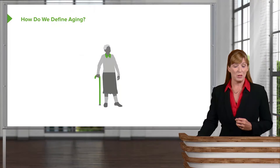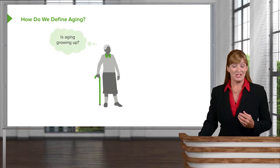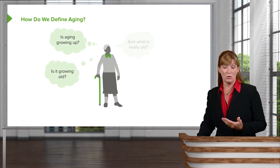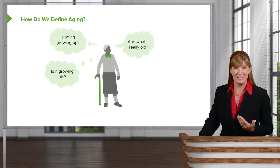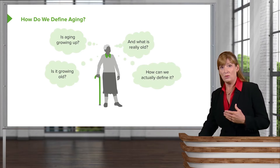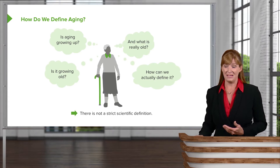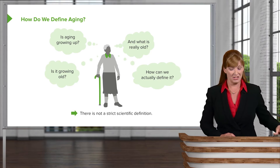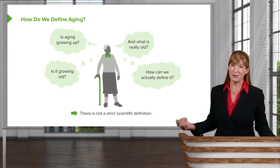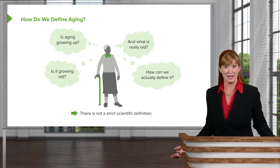Let's begin by looking at how we define aging. Is aging growing up? Is aging growing old? And then what is really old anyway? And how do we actually define aging? As it turns out, there isn't really a solid definition of how we define aging, but I'm pretty sure we all have a good concept of what aging looks like.